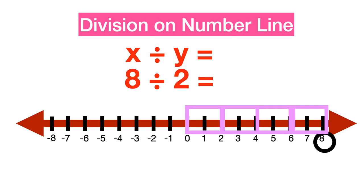Second, starting from 8, keep subtracting 2 until reaching 0. Each time we subtract, we move 2 steps to the left of 8 until we reach 0. Thirdly, the number of steps of 2 that we move to the left to reach 0 gives us the answer. So the correct answer is 4.